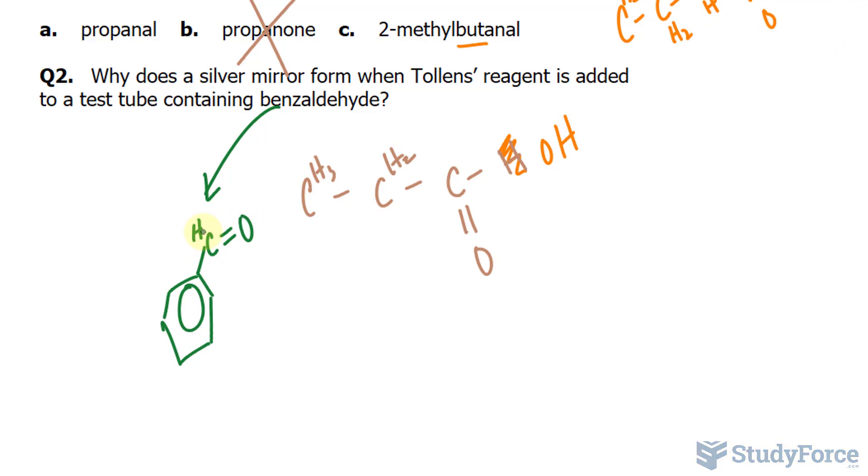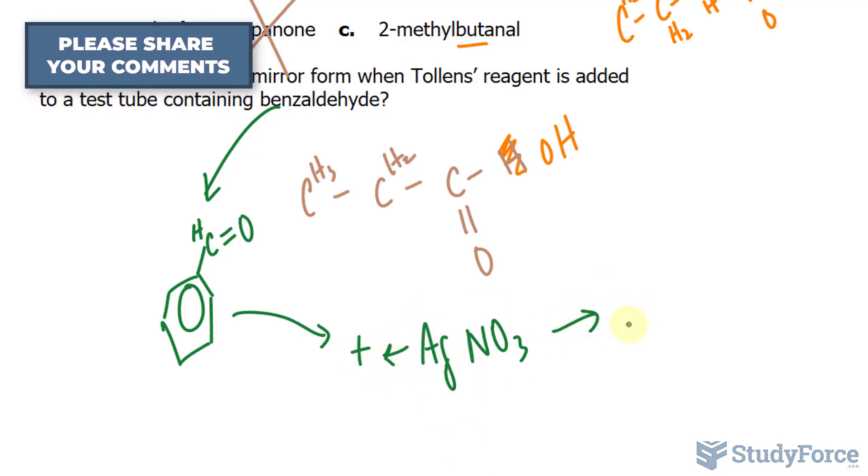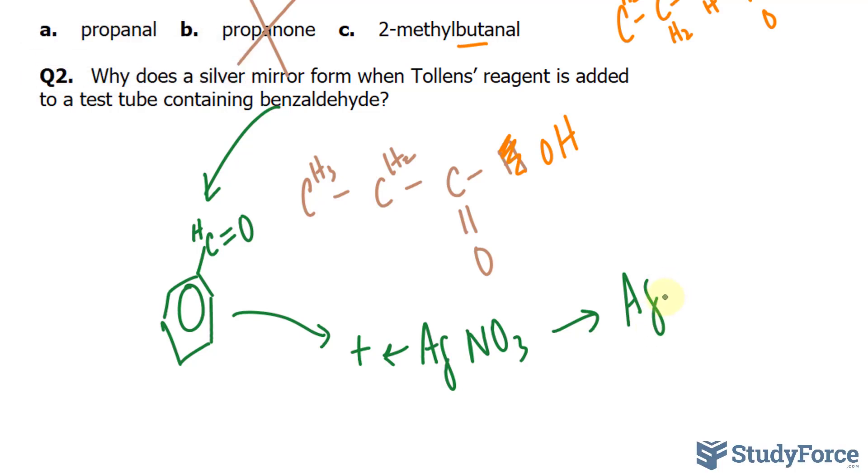The reason this happens is because remember that the reagent consists of silver, and the oxidation of benzaldehyde reduces the silver ion to metallic silver. So it looks like this originally, AgNO3, silver nitrate. When these two come together and react, the silver of this molecule becomes solid silver, or metallic silver, which forms the silvery coating on the inside of the test tube. The complete chemical reaction is shown on your screen.